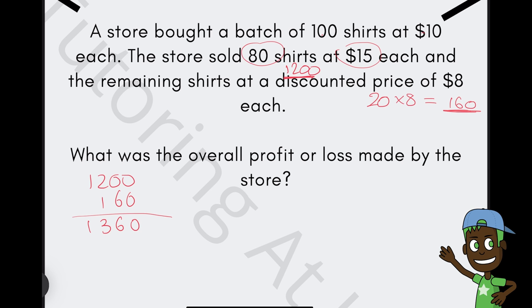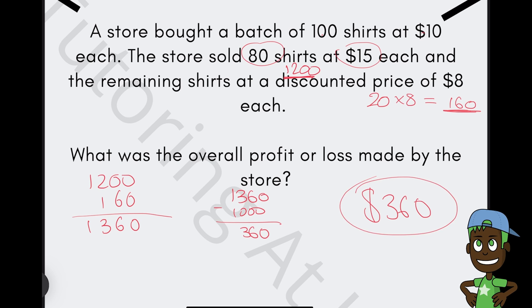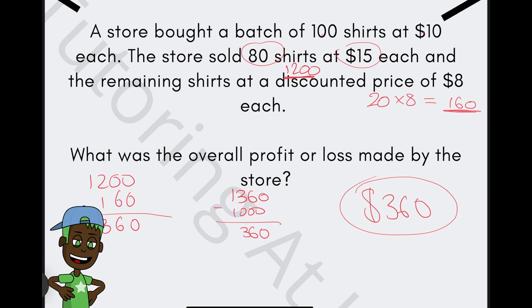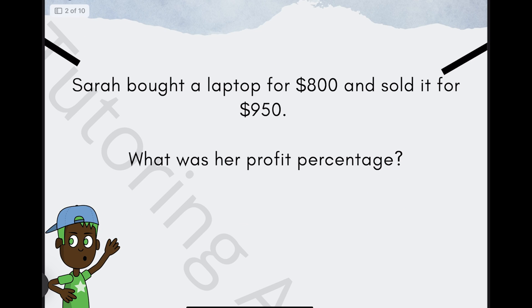So if we take a look at our profit or loss, we'll do our total revenue minus the total cost, which is $1,360 minus $1,000, and we're left with $360. So the overall profit made by the store was $360. Marvelous, you're off to a good start. Let's keep it up and go into question two.